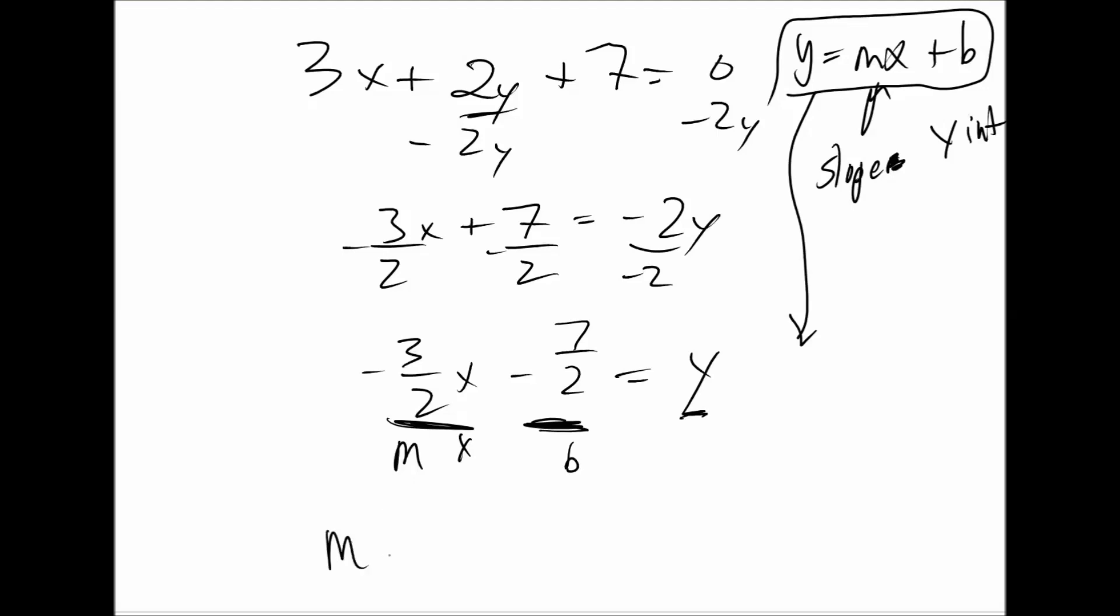So the slope, m, is equal to negative 3 halves. The y-intercept is equal to negative 7 halves.